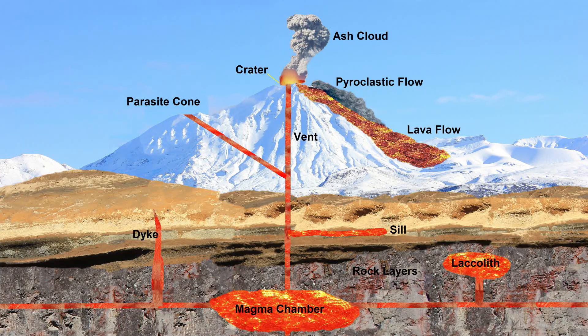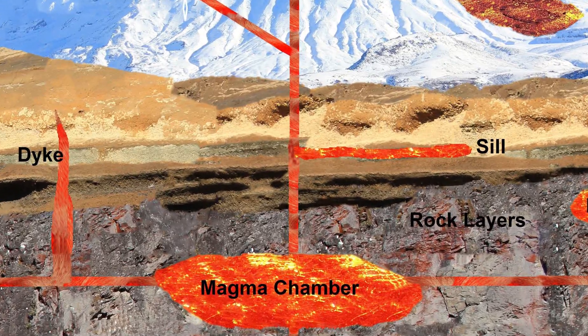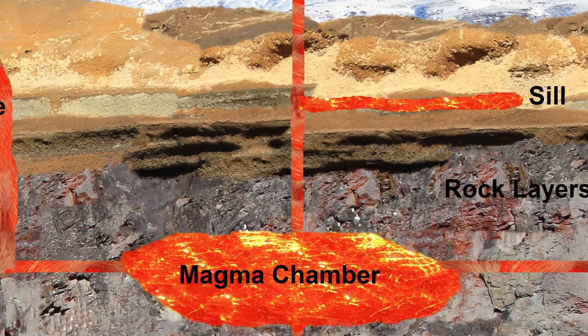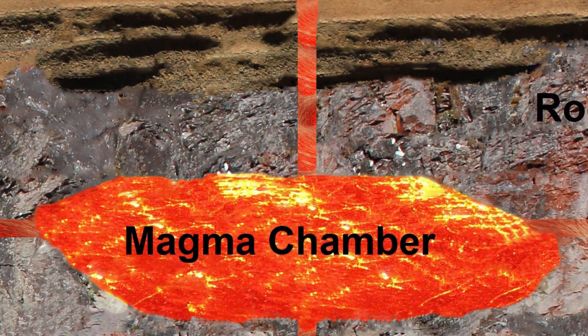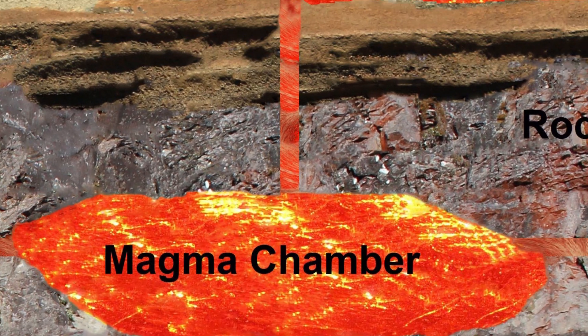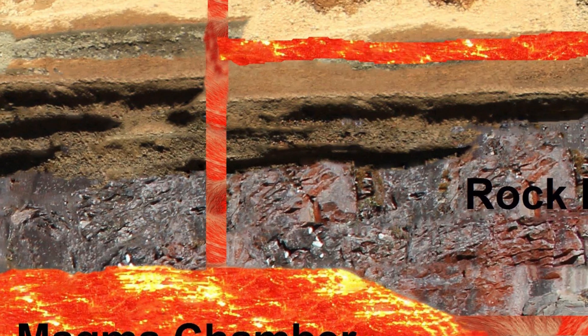Magma from the mantle enters weaknesses in the crust caused by plate movement. A magma chamber may form. From the magma chamber, the magma may do one of the following things.